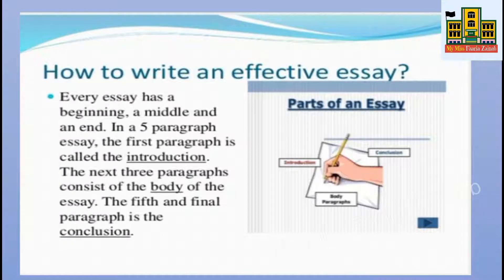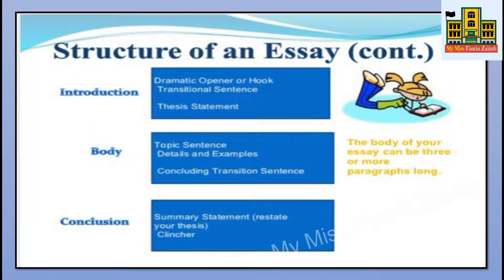Now, how to write an effective essay? Every essay has a beginning, a middle, and an end. In a five-paragraph essay, the first paragraph is called the introduction. The next three paragraphs consist of the body, and the fifth and final paragraph is the conclusion. The first paragraph is the dramatic opener or the hook, and it must contain a transitional sentence. The body can be three or more paragraphs, and the last is the concluding paragraph where we reach the conclusion of the essay.